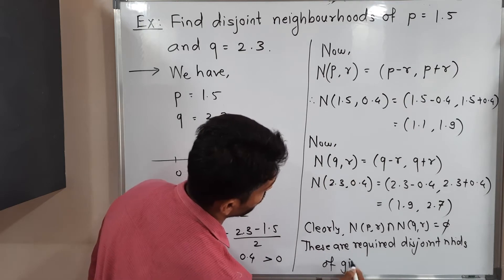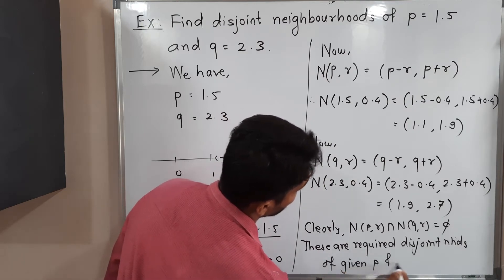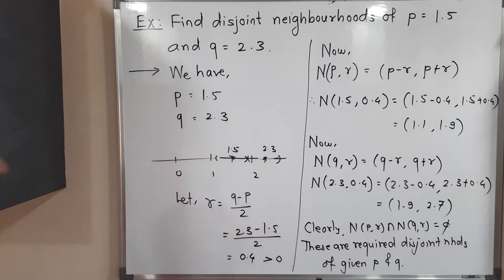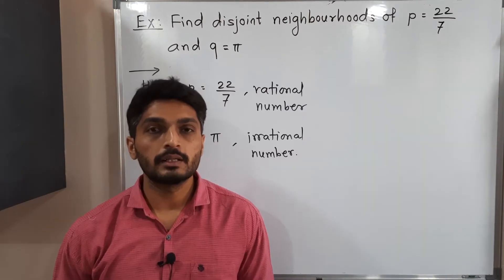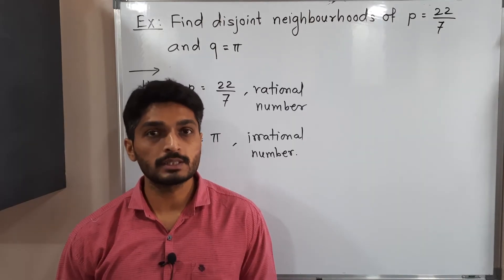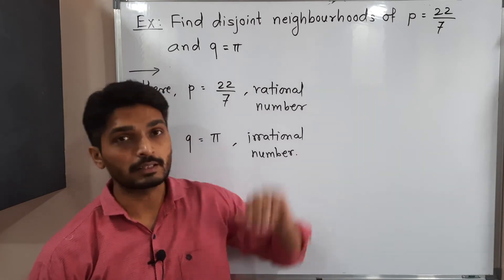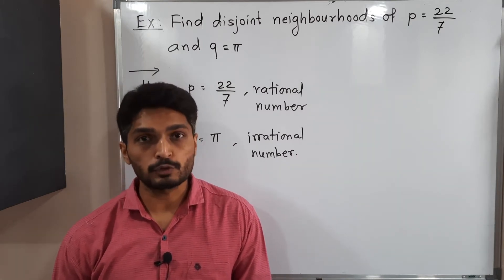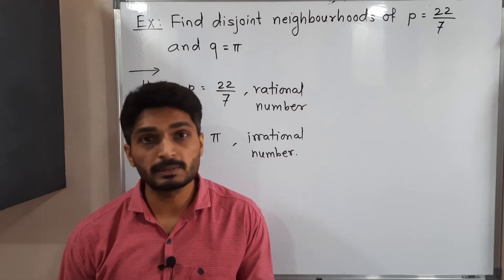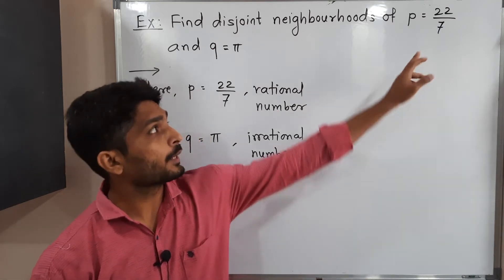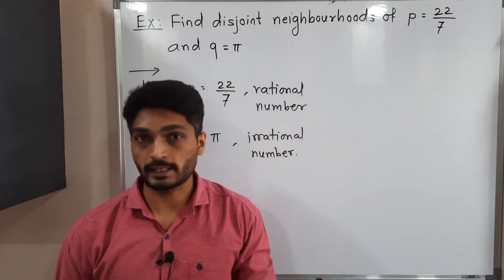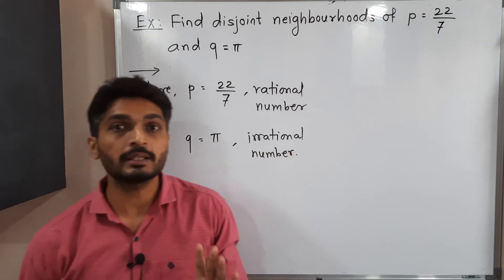In this way we completed the first example. Now let us discuss the second example. Here P = 22/7 and Q = π. You might think both numbers are the same, but they are not. 22/7 is only an approximate value of π, not exact. Furthermore, 22/7 is a rational number while π is an irrational number — it equals 3.142... and never terminates. So clearly both are distinct.